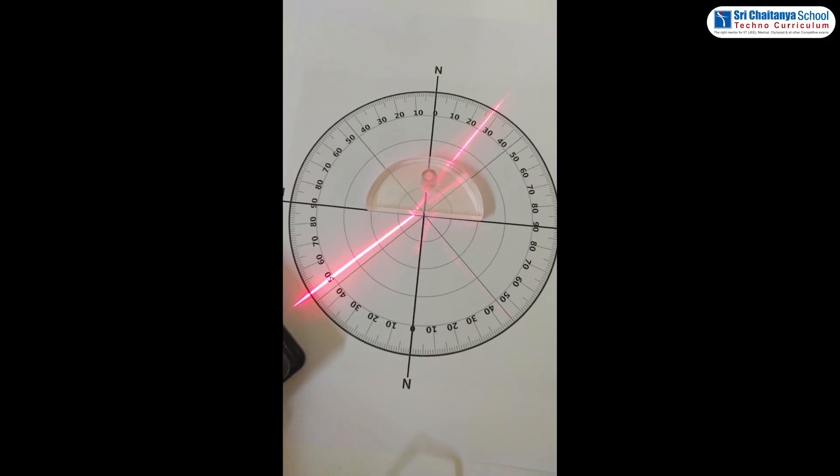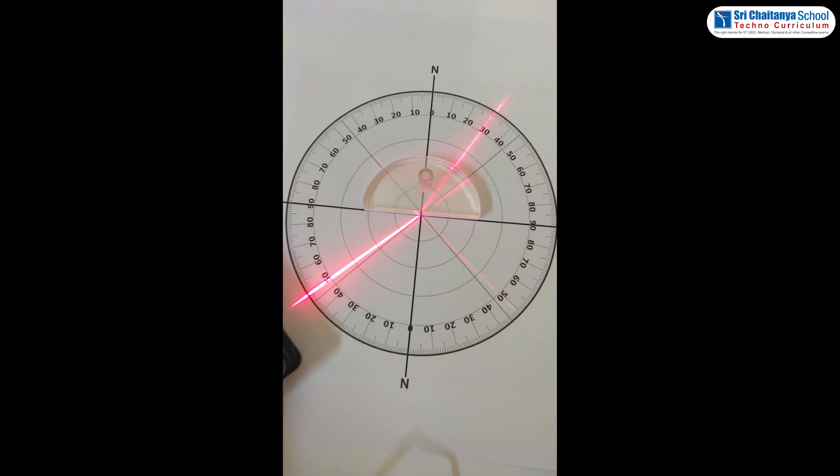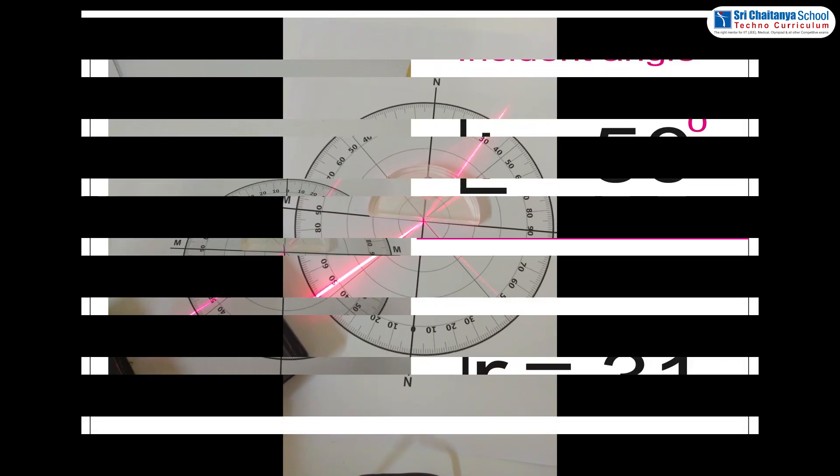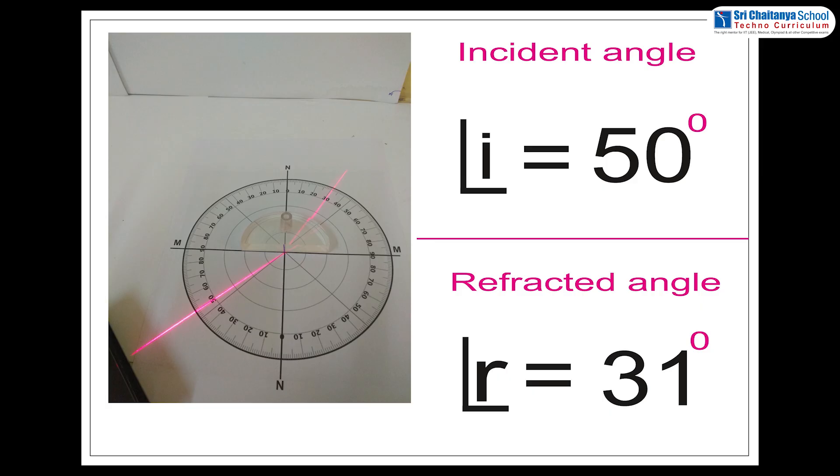Now, place the laser light at 50 degrees. That means, angle of incidence is 50 degrees. For this, find the angle of refraction. Here, it shows 31 degrees. Angle of refraction is 31 degrees. Note down these values.